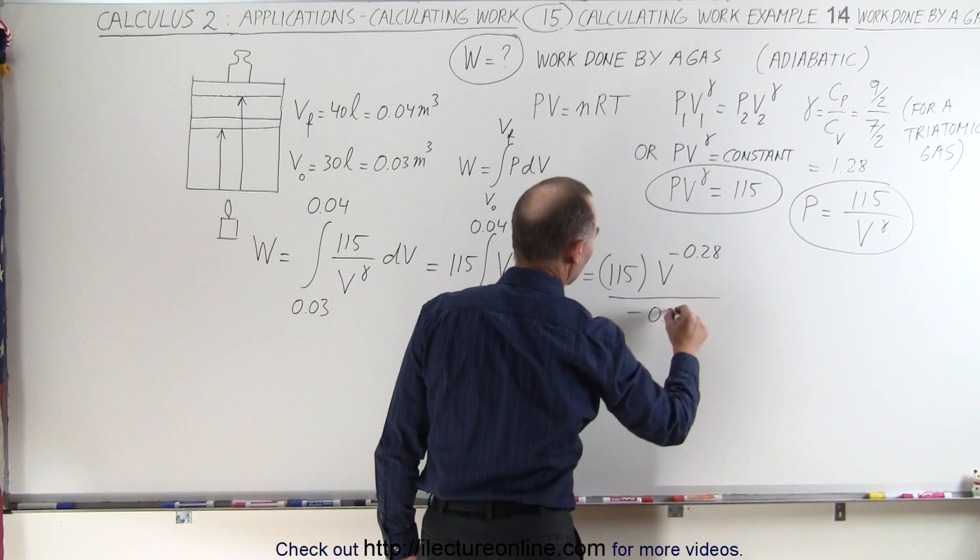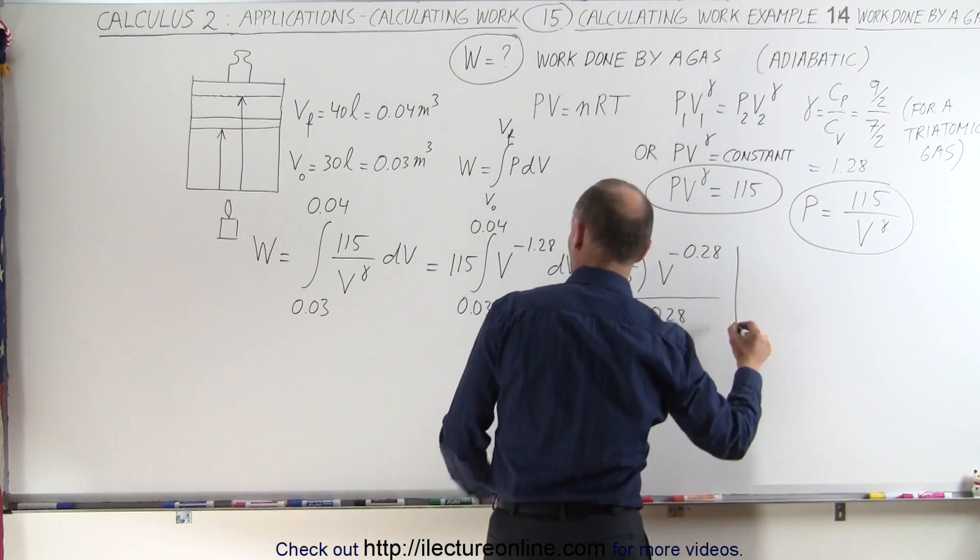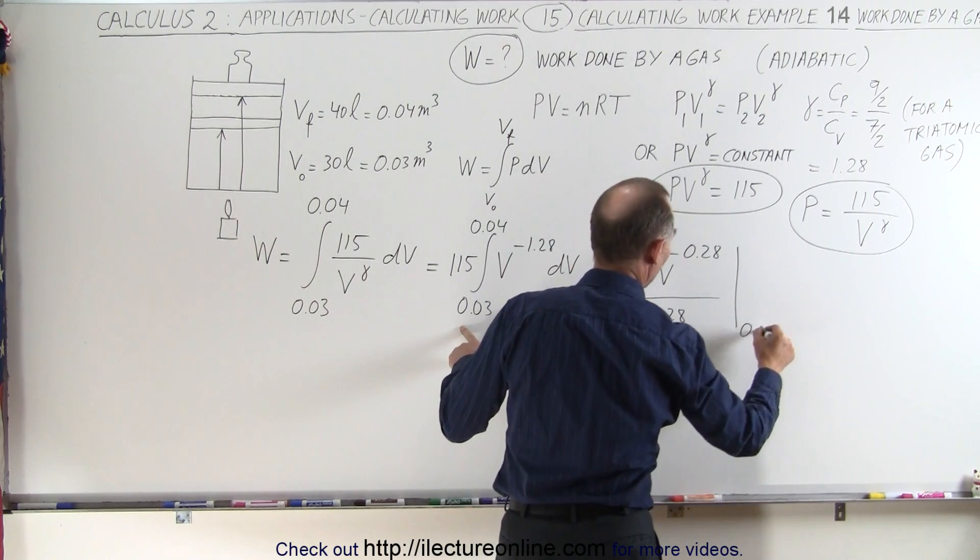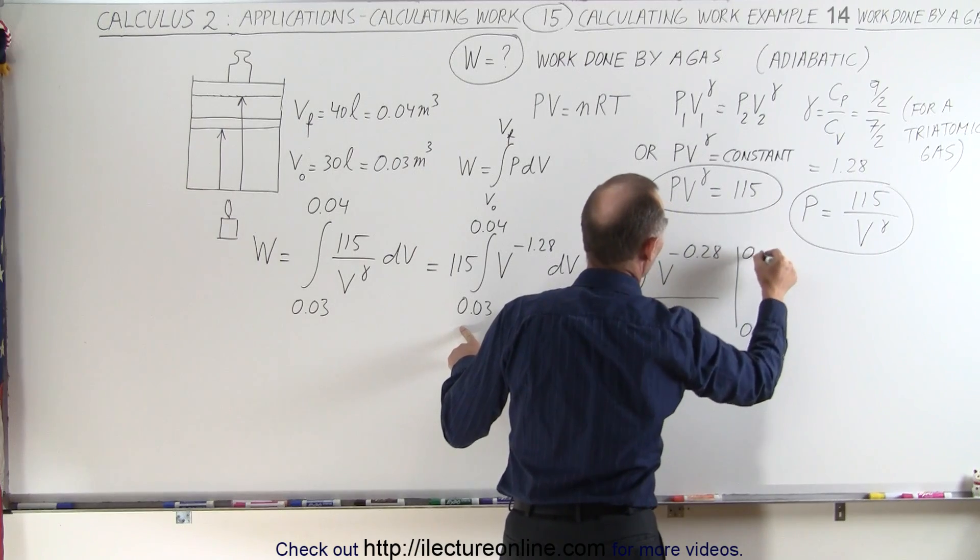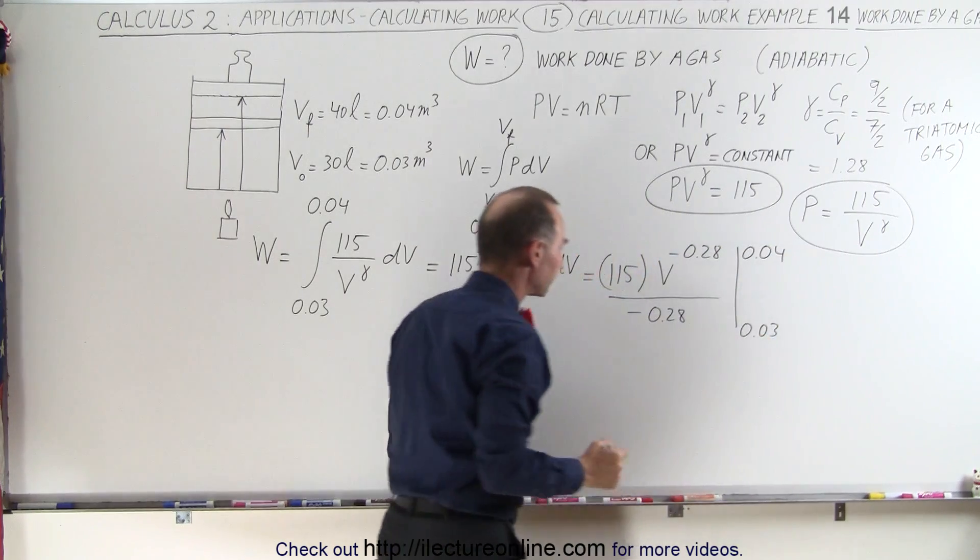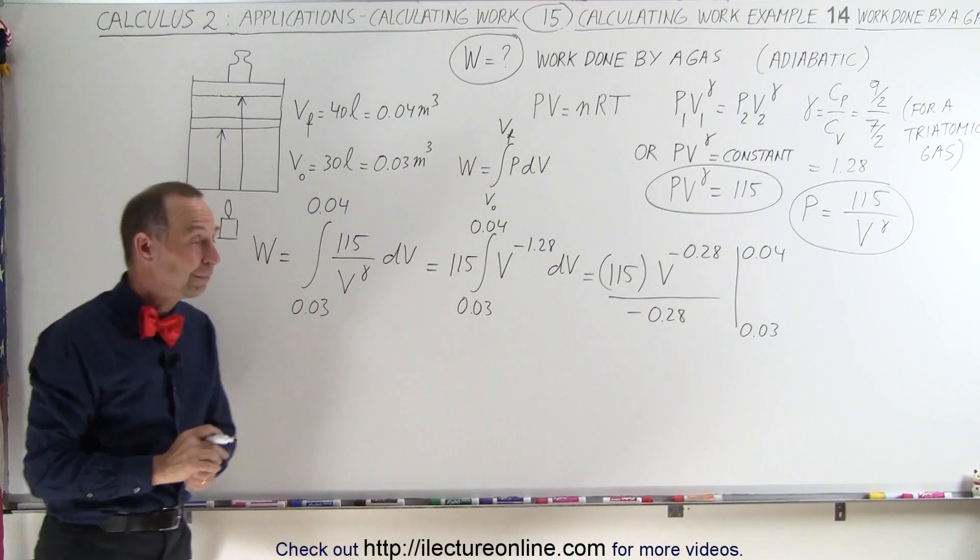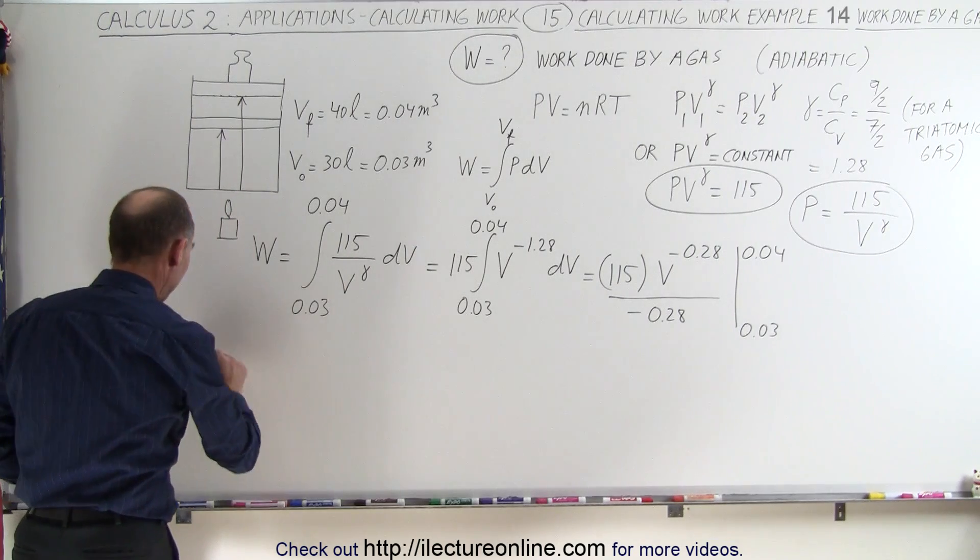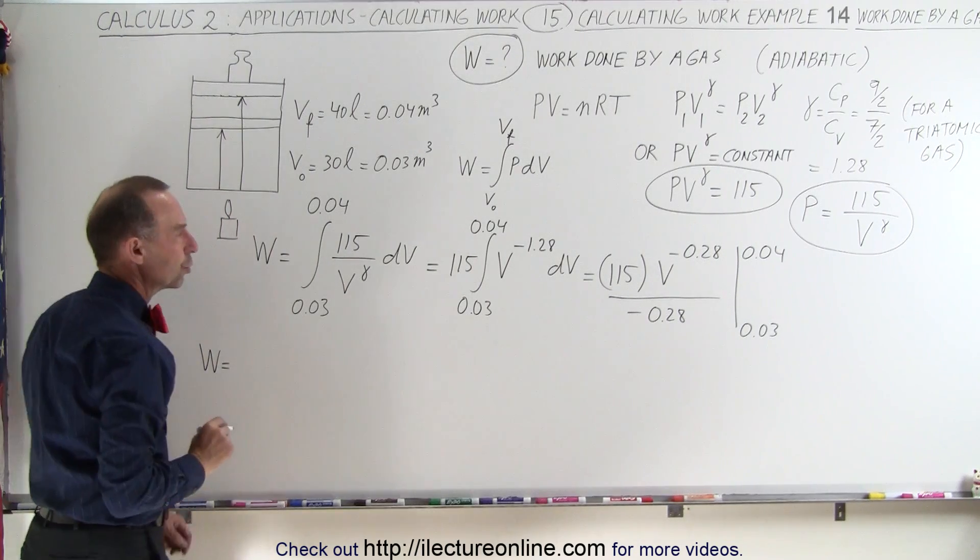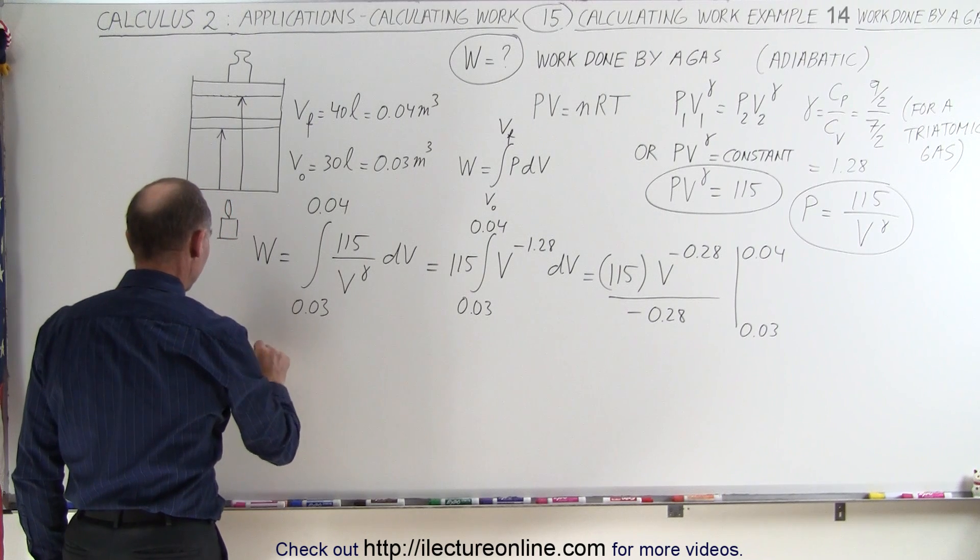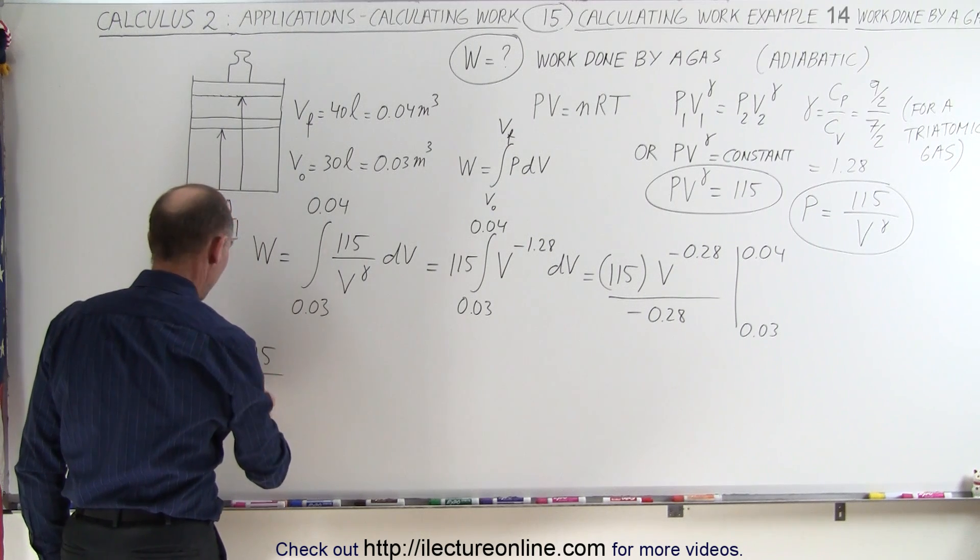This is equal to 115 times v to the minus 0.28, that is one added to the exponent, divided by the new exponent 0.28, and evaluate it from 0.03 to 0.04.